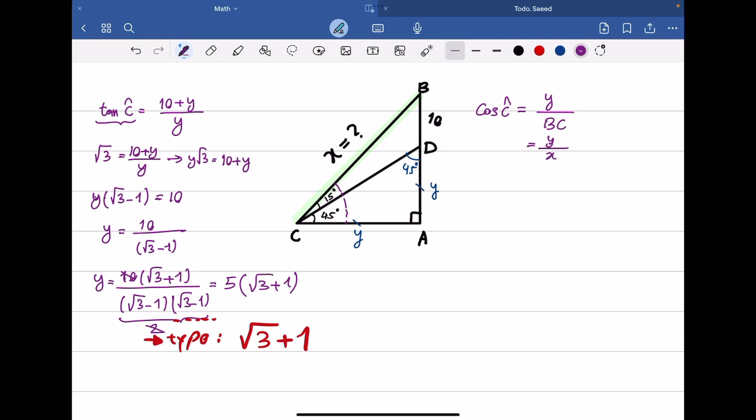Since C is 60 degrees, cosine 60 equals one-half. We know Y equals 5 times (square root of 3 plus 1), so we can solve for X: X equals 10 times (square root of 3 plus 1).